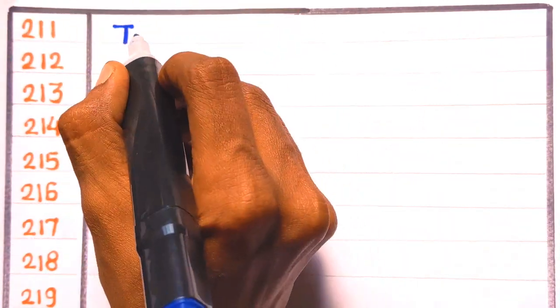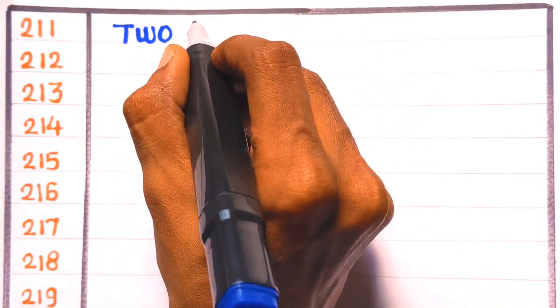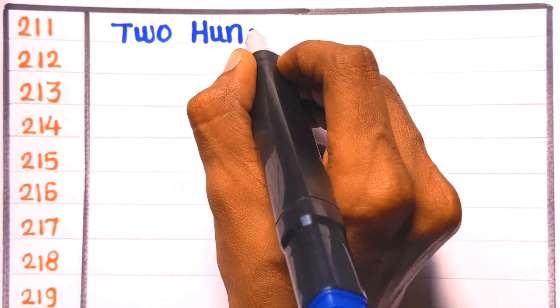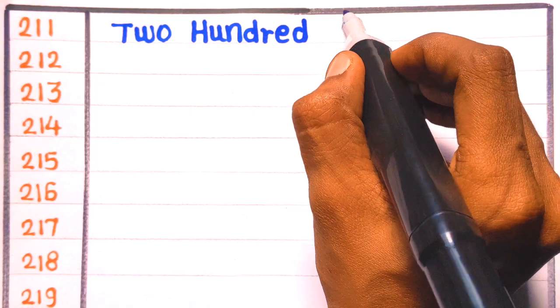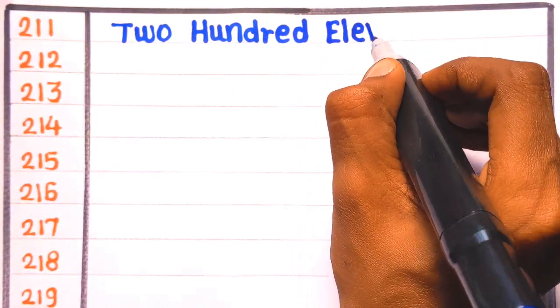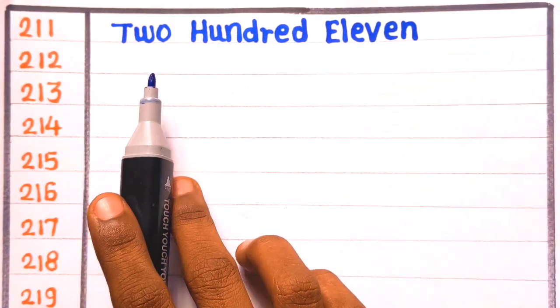T-W-O, two, H-U-N-D-R-E-D, hundred, E-L-E-V-E-N, eleven. Two hundred eleven.